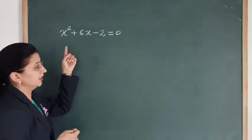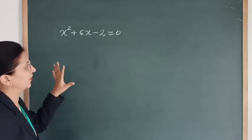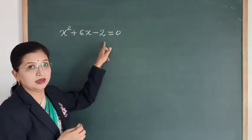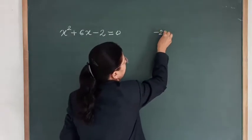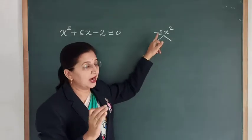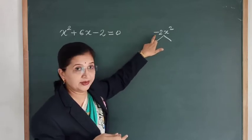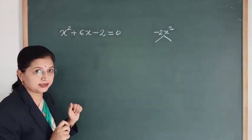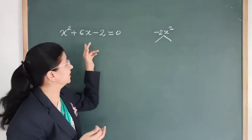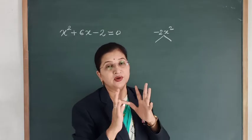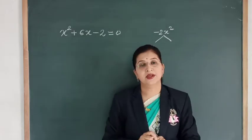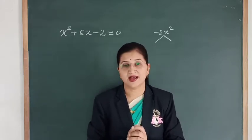Here we have the equation x² + 6x - 2 = 0. Let's try to solve this equation by the factorization method. In the factorization method, we take the product of the first and the last term, that is -2x². Now we have to find factors of 2 such that their subtraction equals the middle term, that is 6. It is not possible to find such factors of 2 whose subtraction gives 6.